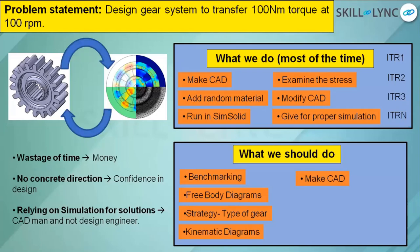After getting all that information, you get the boundary conditions. When you have the boundary conditions, you can make a proper CAD — give it a profile, select the material with confidence. For example, if there is a force of 1000 Newtons and the contact area is around 10 millimeter squared, what type of material do you need — dual-phase material, high-strength steel, or cast iron steel? These are taken into consideration based on calculations from your free body diagram and kinematics diagram.